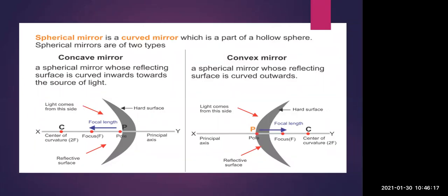In a convex mirror, the reflecting surface is curved outwards. XY is the principal axis, P is the pole, F is the focus, and C is the center of curvature. In a concave mirror, the source of light is on the inward side. In a convex mirror, the source of light is on the outward side, but the focus and center of curvature are on the opposite side.